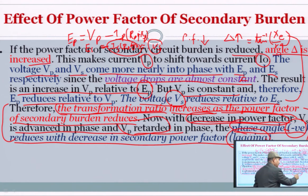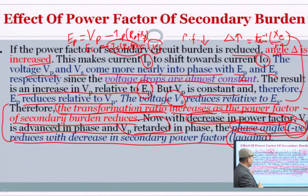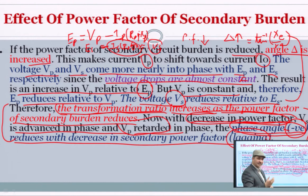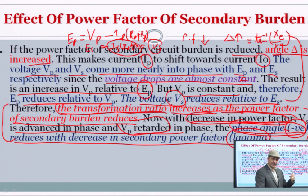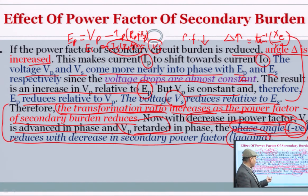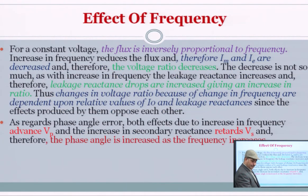So to remember: power factor reduces → ratio error increases. And if the power factor is lagging, the phase angle becomes negative. With decrease in power factor (lagging), the phase angle becomes more negative. Now let us look at the effect of frequency.